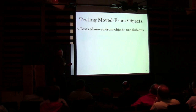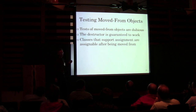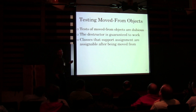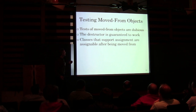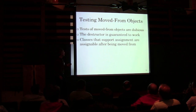Testing move-from objects is dubious. The destructor is guaranteed to work. There are really only two ways of looking at move in tests: you can instrument a class so that you can say 'I am calling this function' and print something out or have a side effect, or you can examine the thing that was moved from.